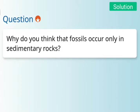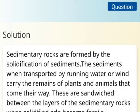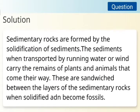The first question is: Why do you think that fossils occur only in sedimentary rocks? The answer is: Sedimentary rocks are formed by the solidification of sediments. The sediments, when transported by running water or wind, carry the remains of plants and animals that come their way. These are sandwiched between the layers of the sedimentary rocks. When solidified, they become fossils.